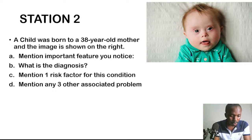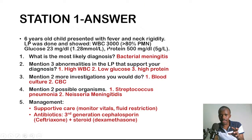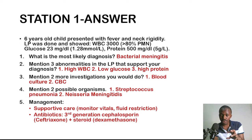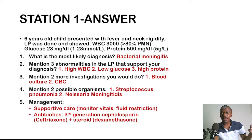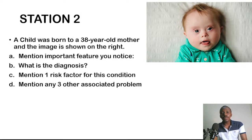In TB meningitis, you'd expect lymphocytes and monocytes, not neutrophils. Neutrophils predominate in bacterial meningitis. Coming back to station two: a child was born to a 38-year-old mother. Mention important features you notice, give your diagnosis, mention one risk factor, and list any three other associated problems.